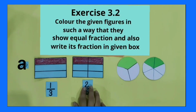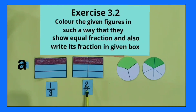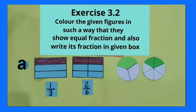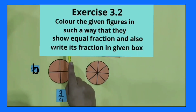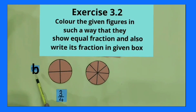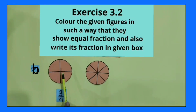Now students, you saw one by three and two by six are equivalent to each other because they represent the same part. These are circular shapes.